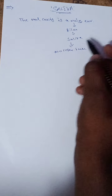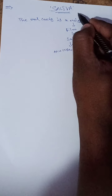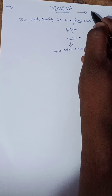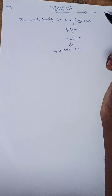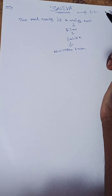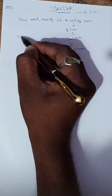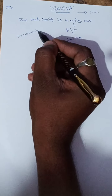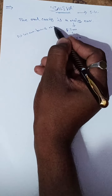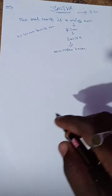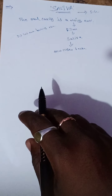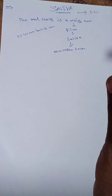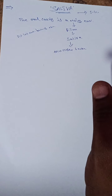Saliva is a complex fluid produced by the salivary glands. It is mainly important in maintaining the well-being of the mouth. Saliva is produced from the salivary glands.